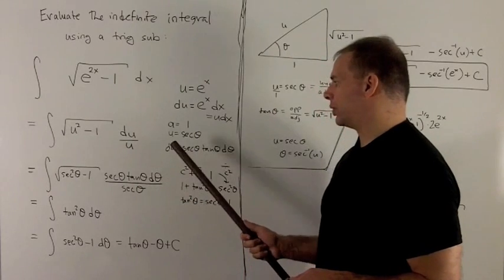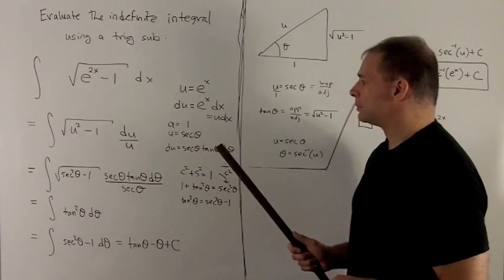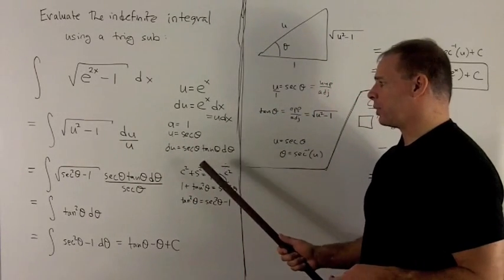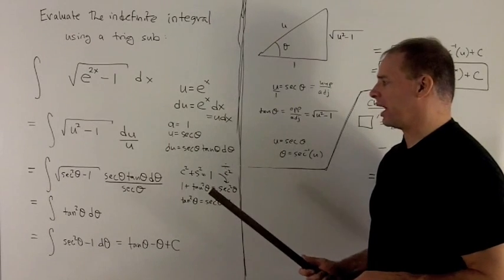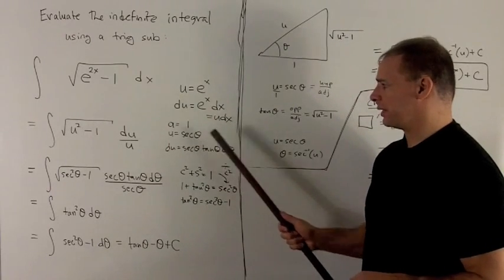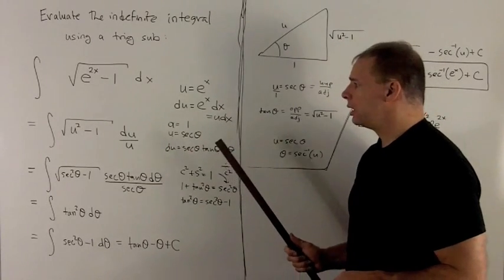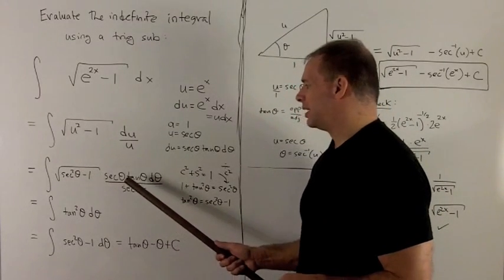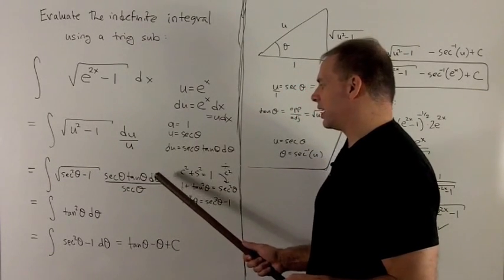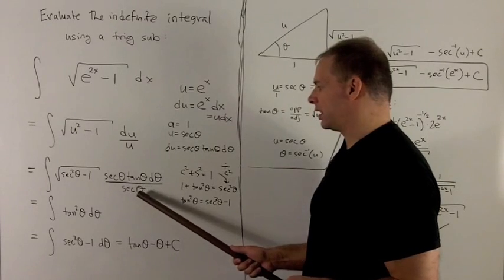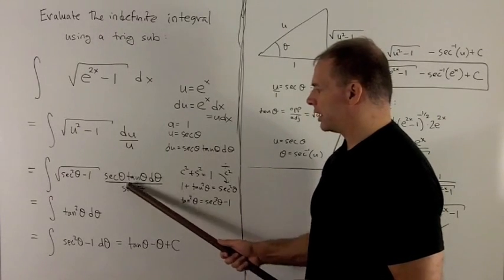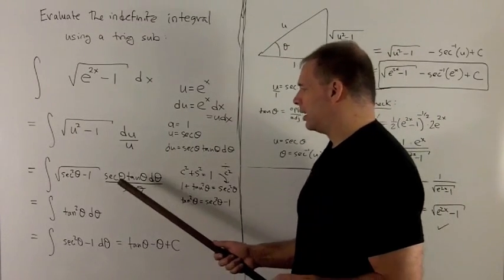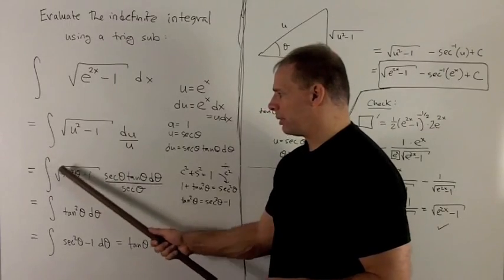We're going to let u be equal to secant of theta, then we have du equals secant theta tan theta d theta, derivative of secant theta. So I put things in, I have secant squared minus 1, secant theta tan theta d theta, and then u equals secant theta. The secant thetas are going to go away, then we just have to worry about this term out in front.